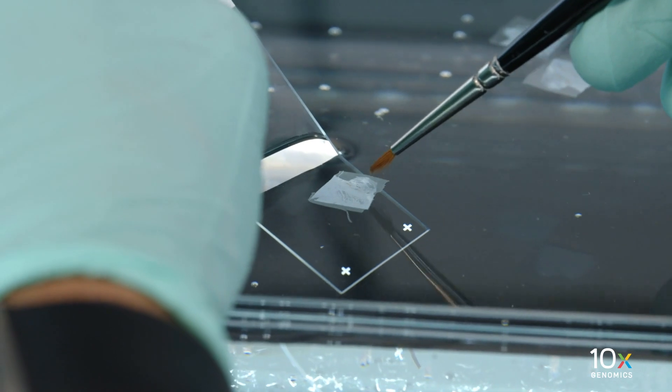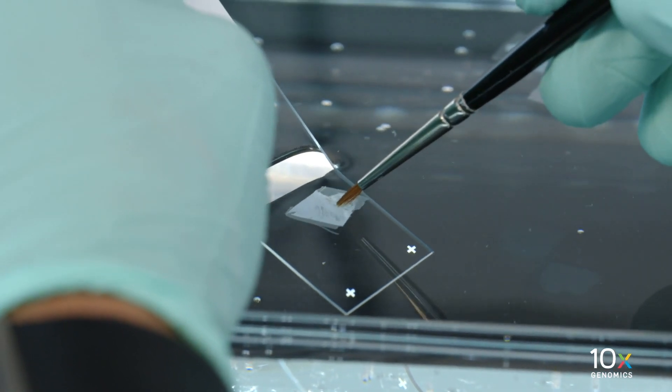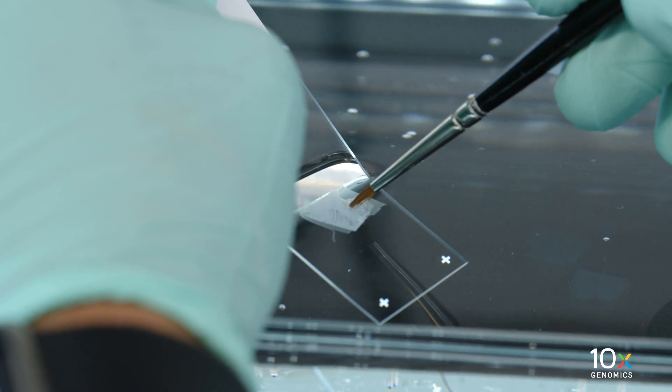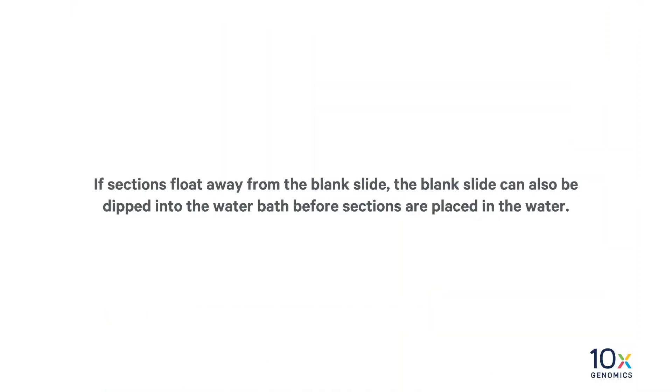While keeping the blank slide straight, use the paintbrush or probe to maneuver the section to the allowable area. If sections float away from the blank slide, the blank slide can also be dipped into the water bath before sections are placed in the water.